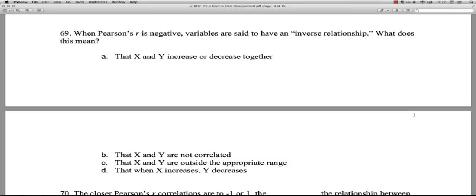B, that X and Y are not correlated. No, that's a correlation of zero. C, that X and Y are outside the appropriate range. That's nothing. That's just thrown in. Ignore that one. D, that when X increases, Y decreases. Yes, that is correct. Negative correlation means as one variable, values on one variable go up, they go down on the other. So D is the correct answer.